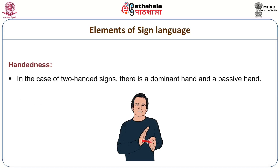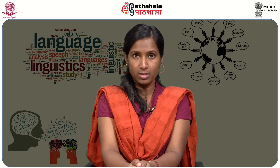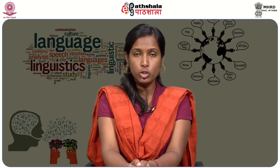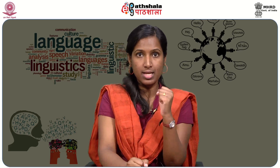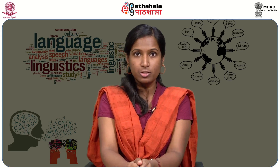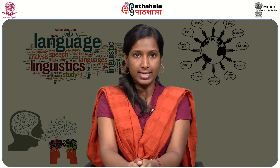Handedness. In sign language, there are one-handed signs as well as two-handed signs. In the case of two-handed signs, there will be one dominant hand and one passive hand. Sometimes signers show handedness — they keep either the left hand or the right hand as the dominant hand. This is called handedness in sign language.